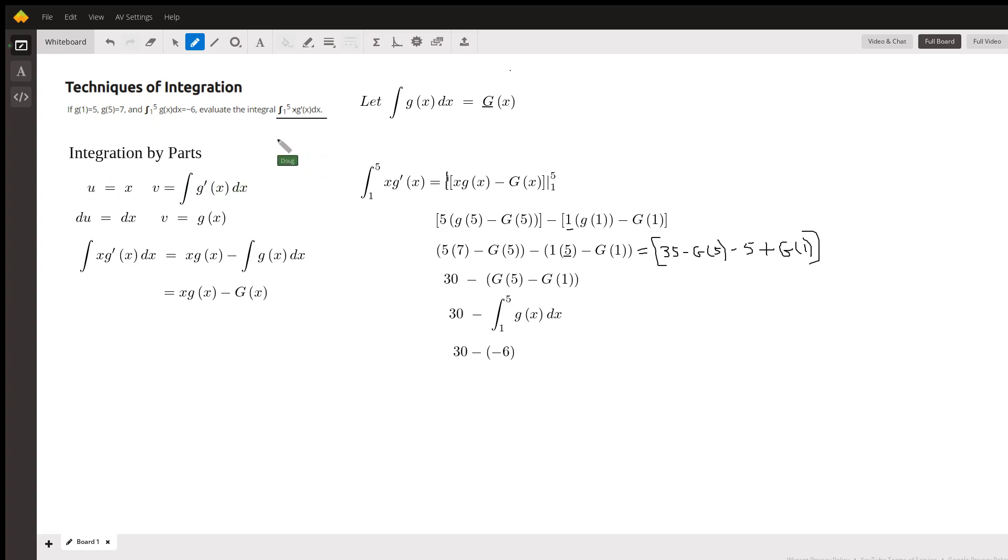I'm going to find an antiderivative for x g'(x) dx, letting u equal x and dv equal the antiderivative of everything else, which would be g'(x) dx.